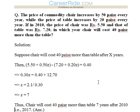Next question. The price of commodity chair increases by 50 paise every year while the price of table increases by 20 paise every year. If in 2010 the price of chair was Rs. 5.50 and that of table was Rs. 7.20, in which year will chair cost 40 paise more than table?